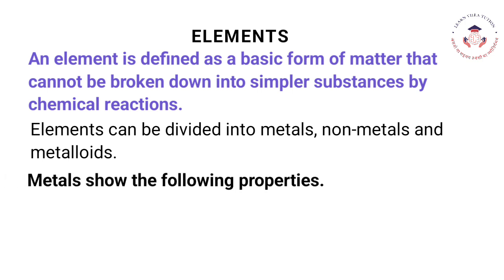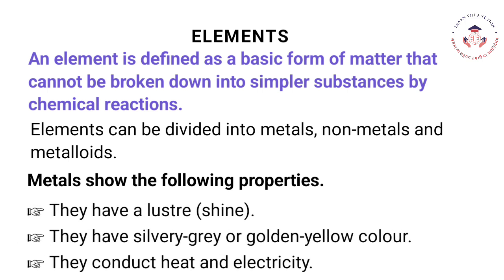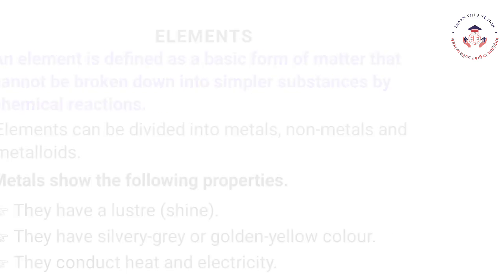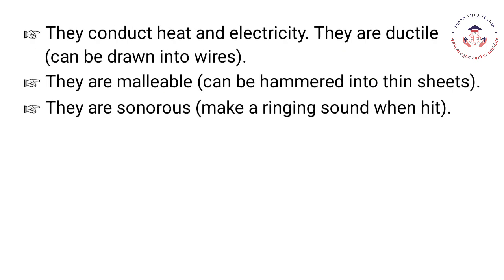Metals show the following properties: They have a luster and shine. They have silvery gray or golden yellow color. They conduct heat and electricity. They are ductile, meaning they can be drawn into wires. They are malleable, meaning they can be hammered into thin sheets. They are sonorous, meaning they make a ringing sound when hit.